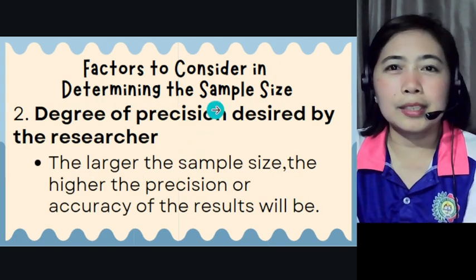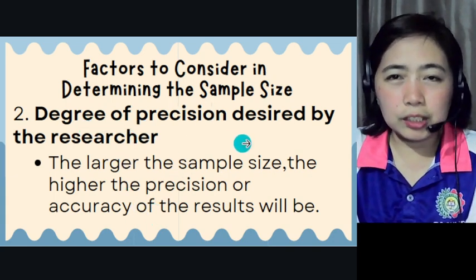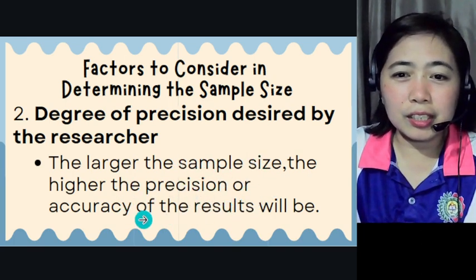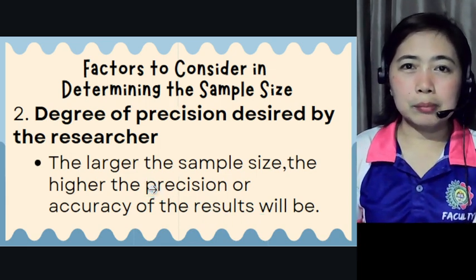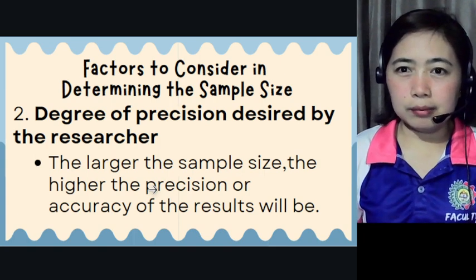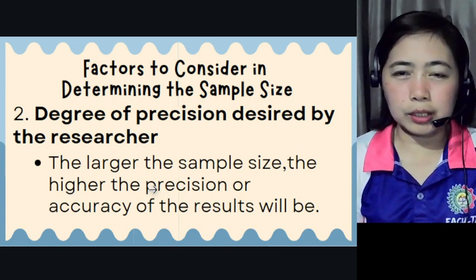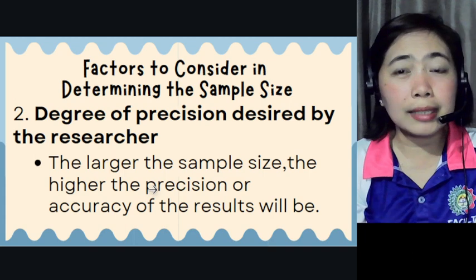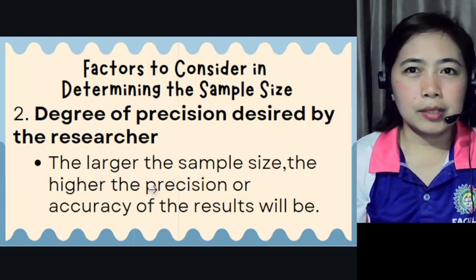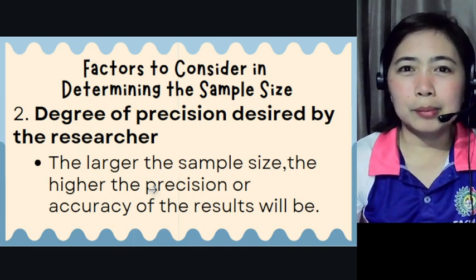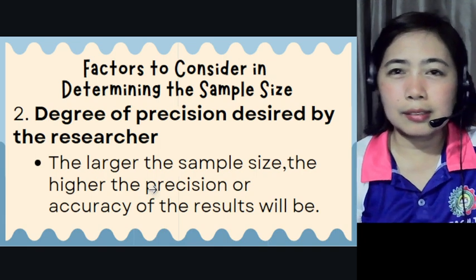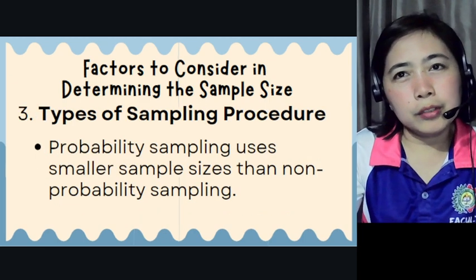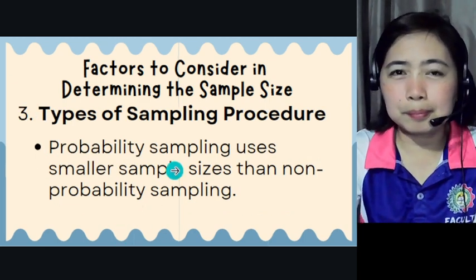Another factor is the degree of precision desired by the researcher. The larger the sample size, the higher the precision or accuracy of the results will be. The more respondents or participants, the more credible your data. You can have less than 10 respondents if your research design is a case study, but if it is phenomenological, then 10 is the minimum.